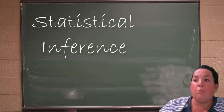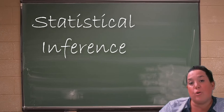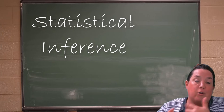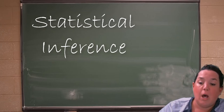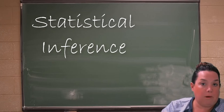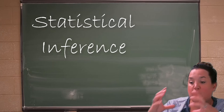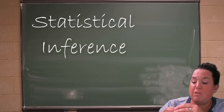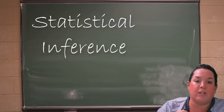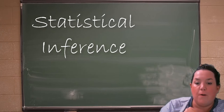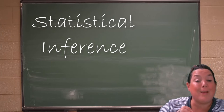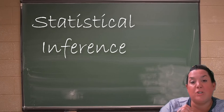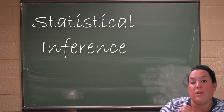I will be showing you how to create a confidence interval that you hope contains your parameter of interest, which, as of late, we've been talking about P and mu. So we'll be creating confidence intervals that we hope contain P, or confidence intervals that we hope will contain mu. Both of those will be created with information we glean from a sample.